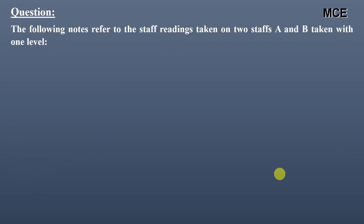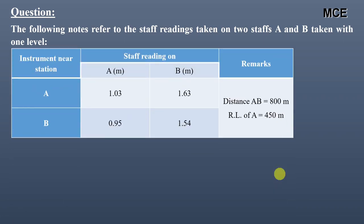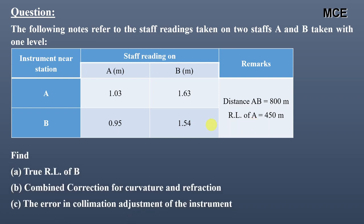The question states that the following notes refer to staff readings taken on two staffs A and B with one level. When the instrument is near station A, staff reading on A is 1.03 m and staff reading on B is 1.63 m. When the instrument is at station B, staff reading on A is 0.95 m and staff reading on B is 1.54 m. The distance AB is 800 m and the reduced level of A is 450 m. We need to calculate the true reduced level of B, the combined correction for curvature and refraction, and the error in collimation adjustment.